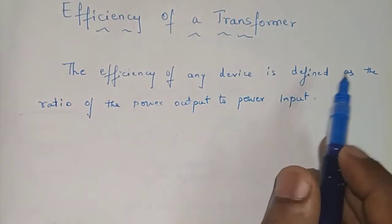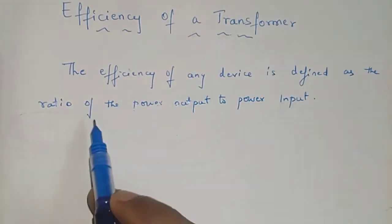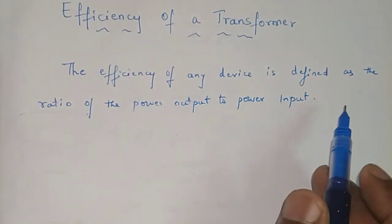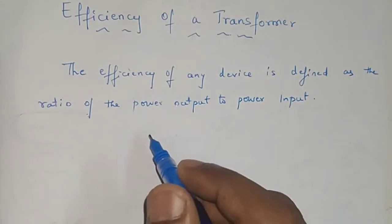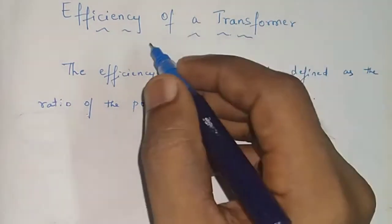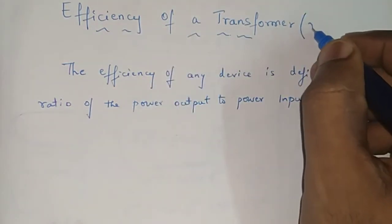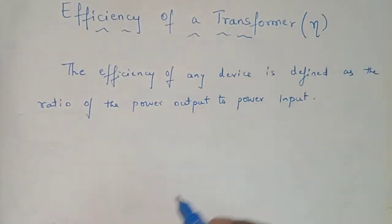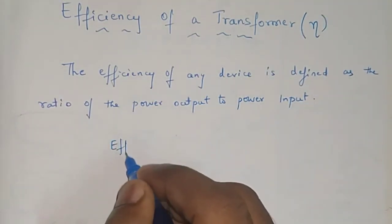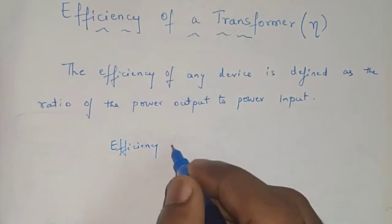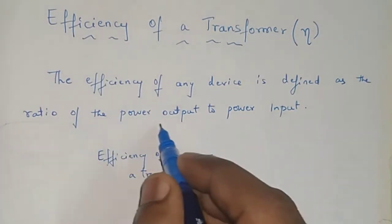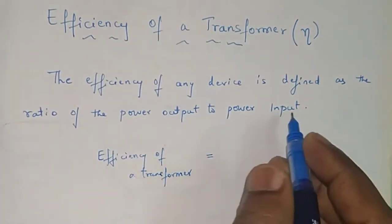Efficiency of any device is defined as the ratio of the power output to the power input. So for the transformer, the efficiency formula — the efficiency of a transformer is defined with the variable eta. So according to the definition, it is the ratio of the power output to the power input.